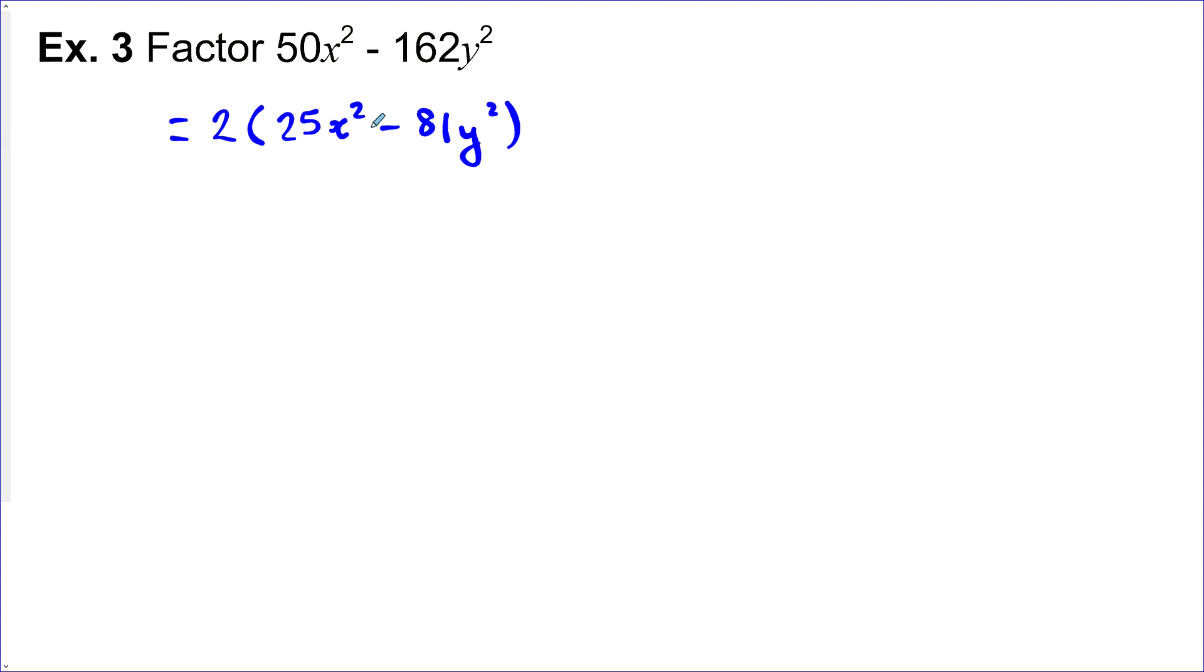Now these are actually special. Whenever we see we don't have a middle term, but we do have a negative sign here. This term is a perfect square. This term is a perfect square. We call this a difference of perfect squares. And we can factor those really easily by taking the square root of the first term, which is 5x. And the square root of the last term, which is 9y. Write it twice and one will be plus and the other minus.